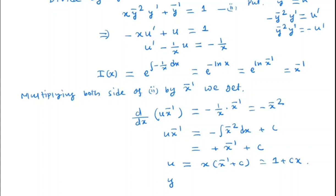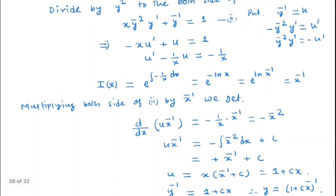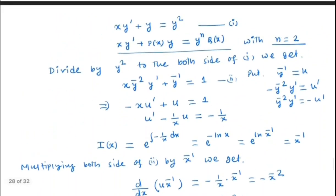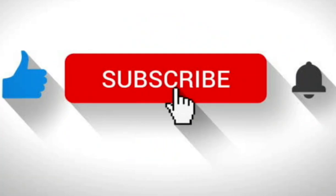So u equals x times (x^(−1) plus c), which is 1 plus cx. And since u is y^(−1), we have y^(−1) equal to 1 plus cx. Therefore the general solution is y equals 1 divided by (1 plus cx). That is how we solve Bernoulli's differential equation.